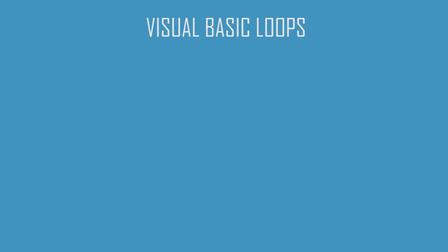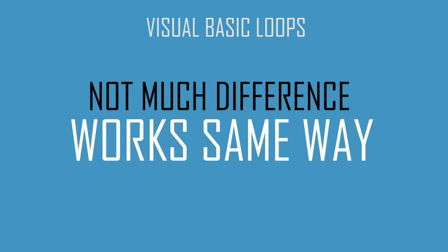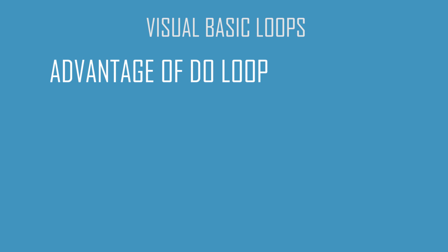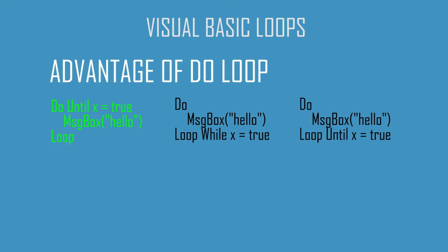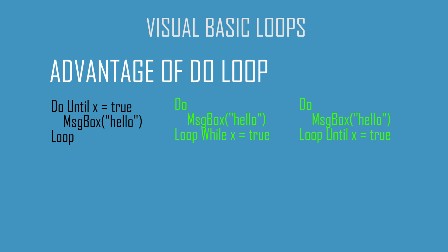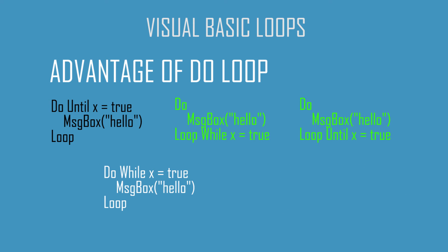To be honest, there is not much difference between these loops — they all work almost the same way, but in some cases every loop has its own advantage. The advantage of the do loop is that it has more forms. Do-until will continue as long as the condition is false. If you use while or until after the loop, then the loop will at least run one time, although the normal do-while loop will act the same way as the while loop.